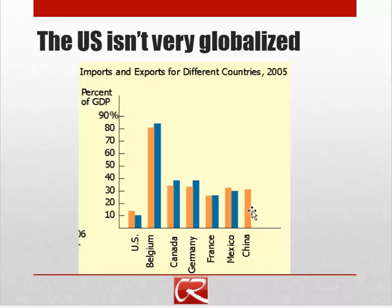We can see that the U.S. is not very globalized, and China is also not very globalized. Smaller countries like Belgium, Canada, and Germany are typically more globalized than larger countries like the U.S. or China. A lot of this simply comes down to the fact that there's only room for a few industries to grow in a small country, whereas a large country like the U.S. or China can support multiple firms in the same industry and will not typically be importing as much.